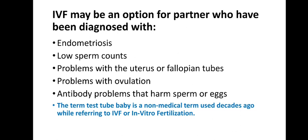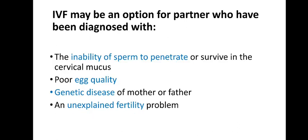Who can opt for IVF? Cases include: a woman having endometriosis; a man with low sperm count (oligospermia); problems with the uterus or fallopian tubes such as blockage or damage; problems with ovulation if cycles are not regular; antibody problems that harm sperm or egg; inability of sperm to penetrate or survive in cervical mucus due to physiological and biochemical conditions; poor egg quality; and in rare cases, genetic disease of the mother or father.